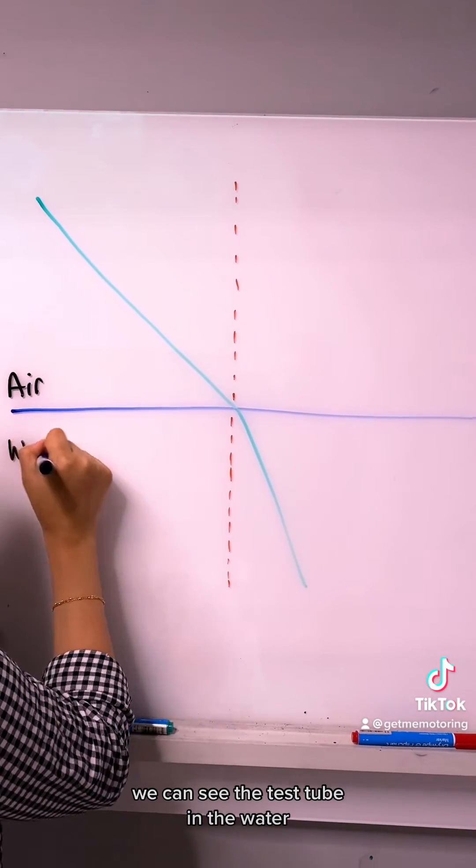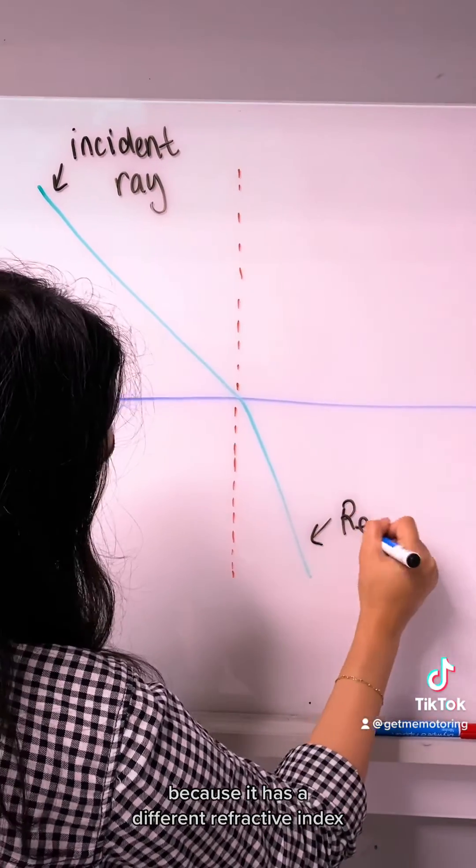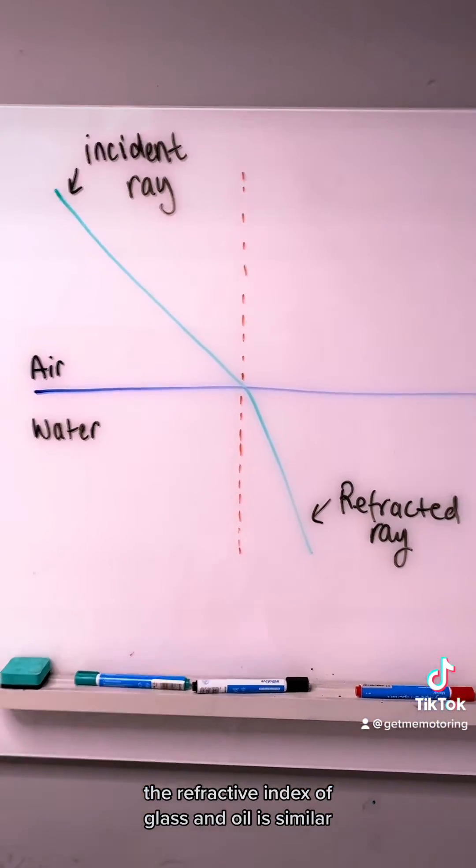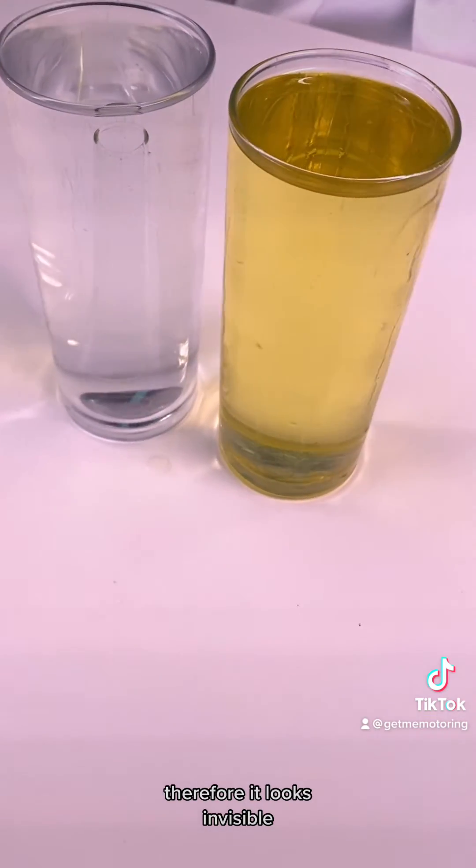We can see the test tube in the water because it has a different refractive index. The refractive index of glass and oil is similar. Therefore, it looks invisible.